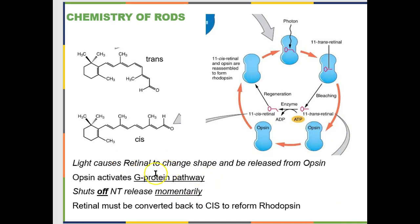In the next slide we'll go over what it means to be a G protein — you don't need to worry about all the details. Light hits the rhodopsin, the opsin releases the retinol, and this activates the G protein pathway which hyperpolarizes or shuts off the rod momentarily. Then the retinol has to be converted back to the cis form before you can reconstitute rhodopsin.